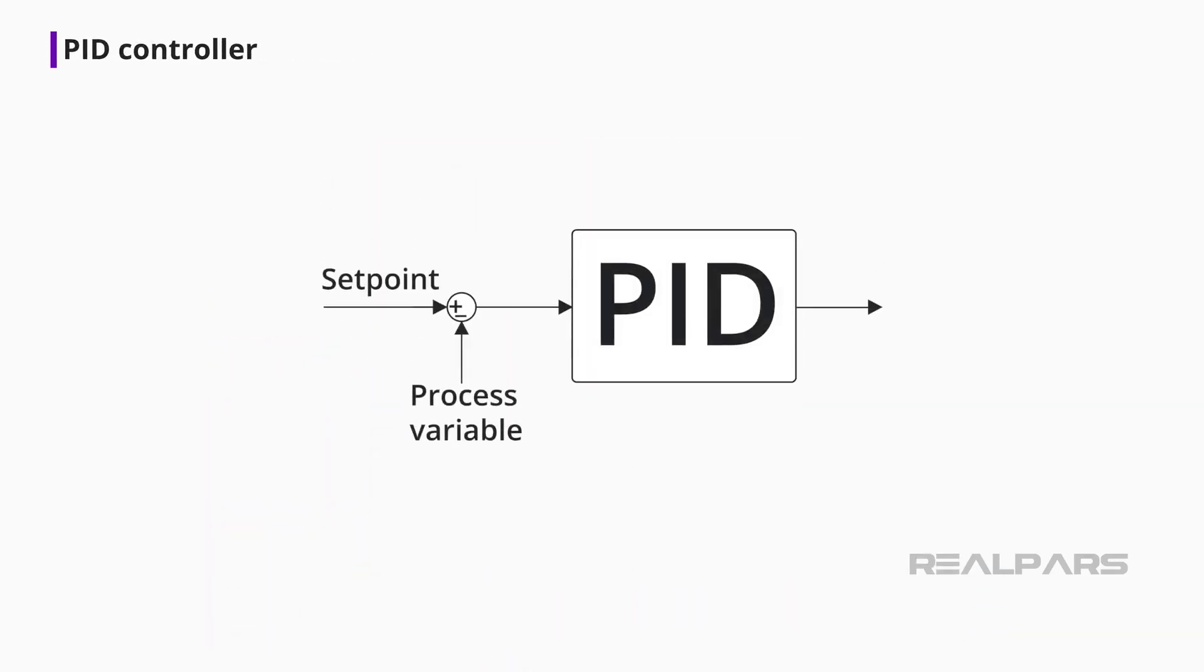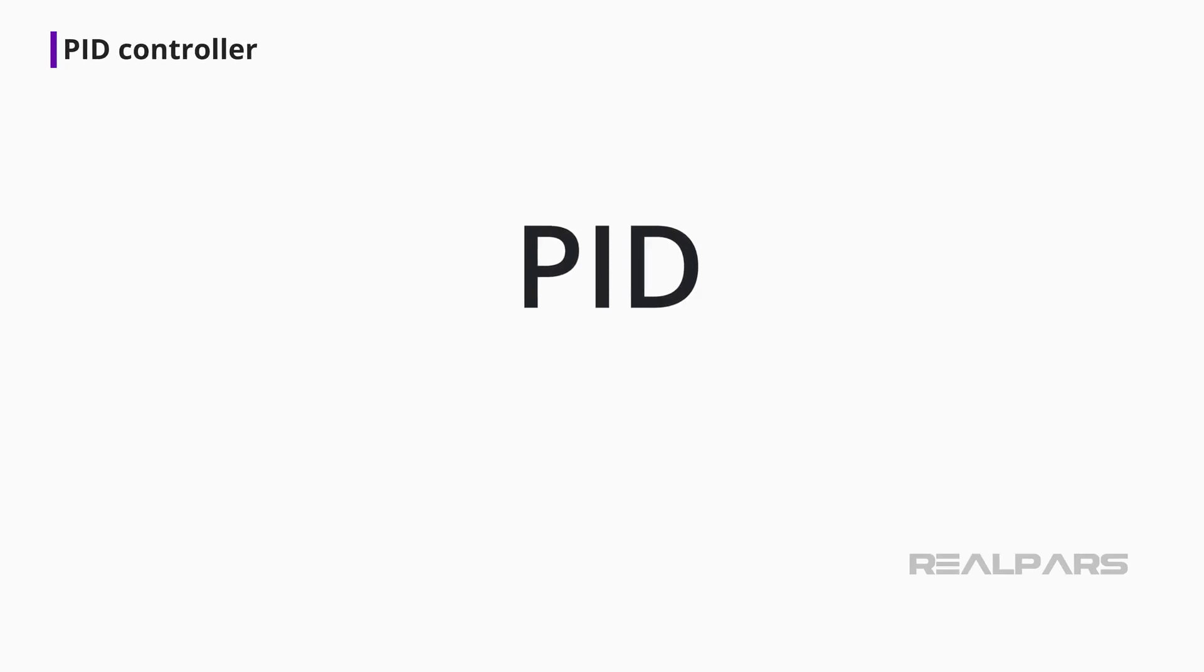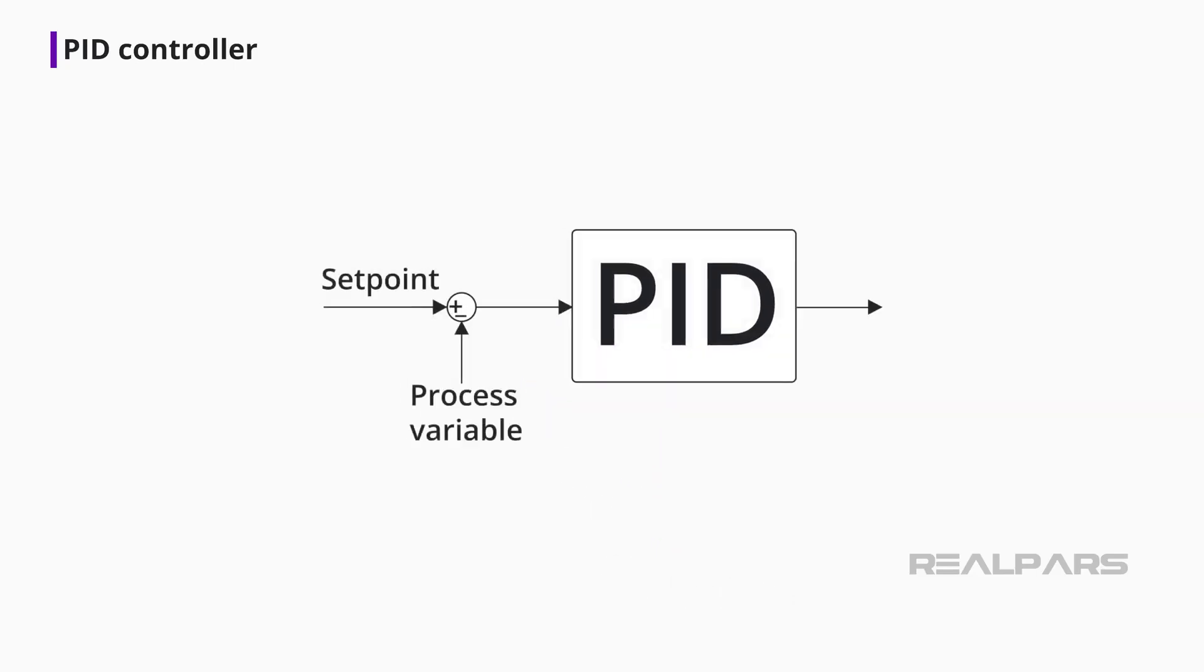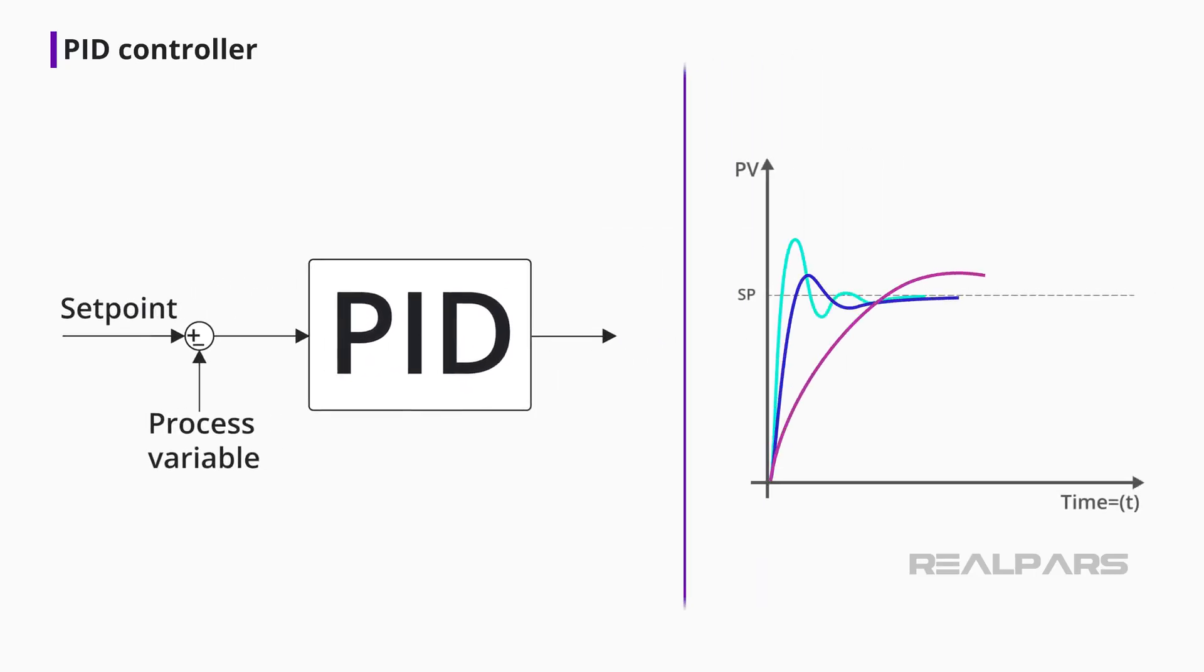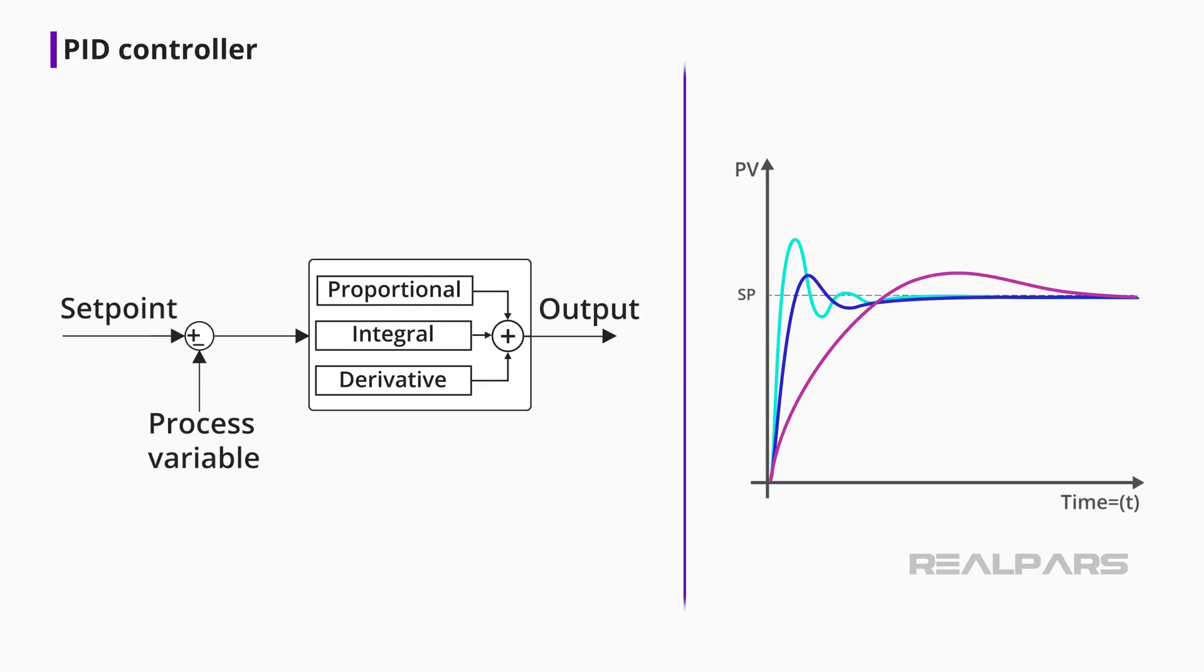Now we can move on to talking about a PID controller. P stands for proportional, I stands for integral, and D stands for derivative. Because every process responds differently, the PID controller determines how much and how quickly correction is applied by using varying amounts of proportional, integral, and derivative action. Each block contributes a unique signal that is added together to create the controller output signal.